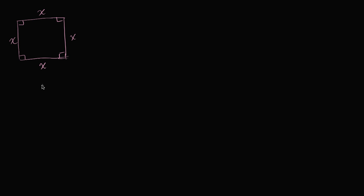We have a square here, and all the sides have length x. What I want to think about is whether the perimeter of the square is proportional to the length of a side of the square. So let's think about it a little bit — I'm going to draw a table.